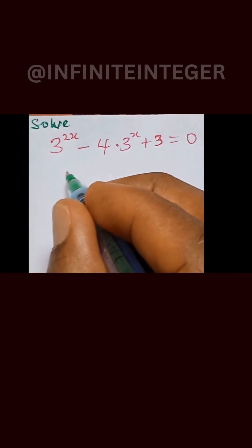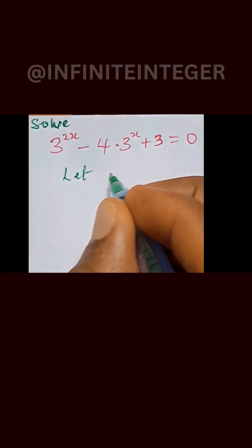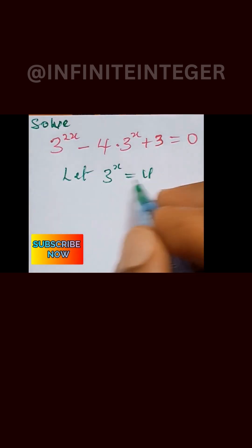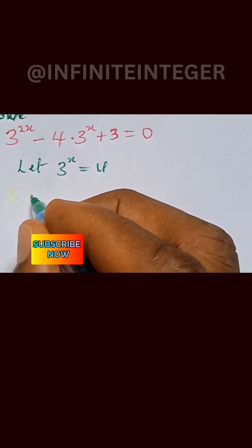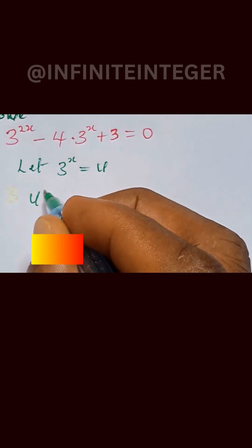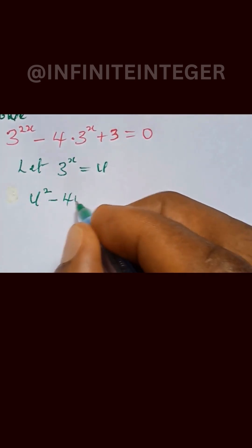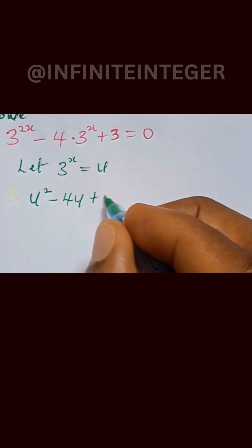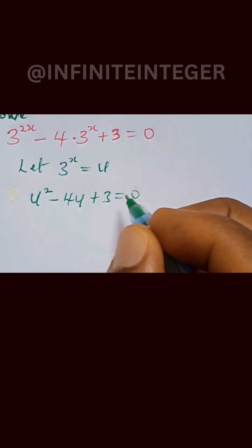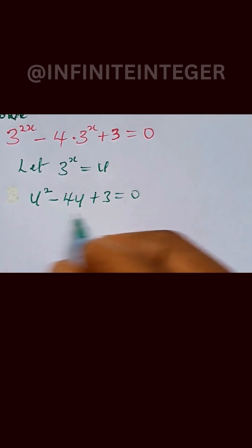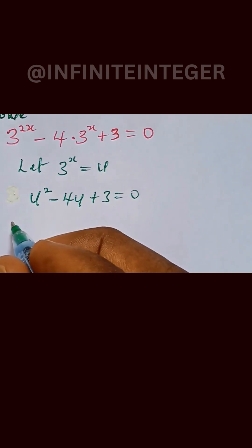To solve this, we'll let 3 raised to power x equal to u, so we'll replace that with u. We now have u raised to power 2 minus 4u plus 3 equals 0, so we can simplify this quadratic equation.